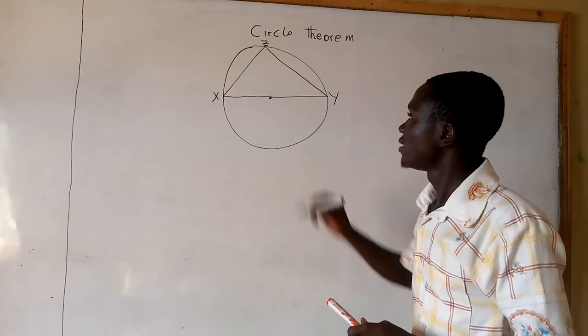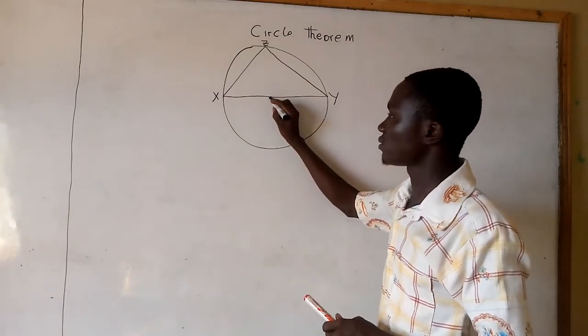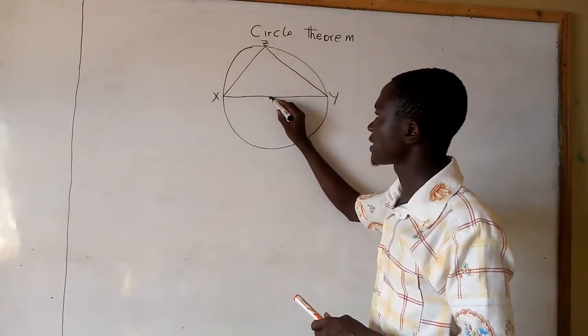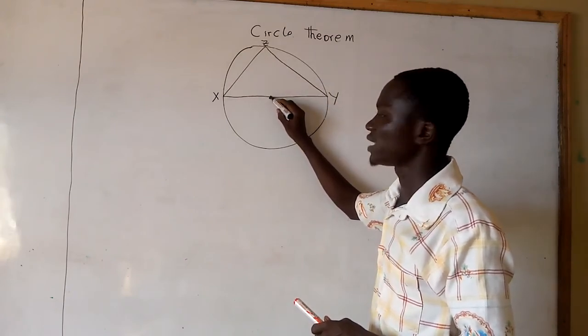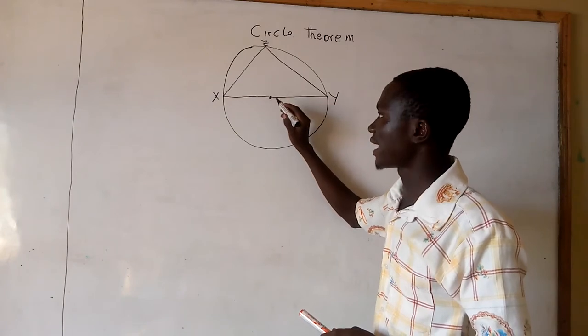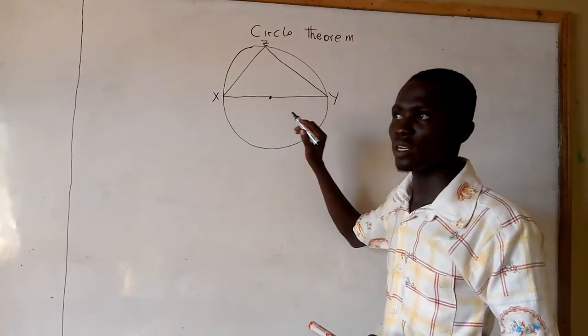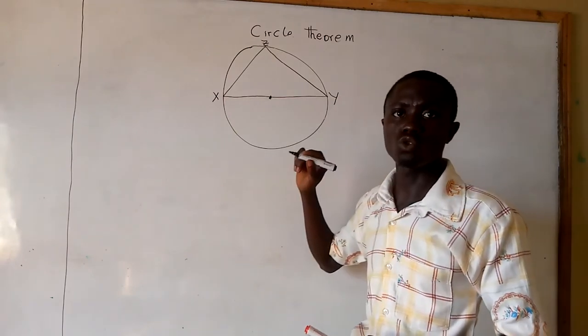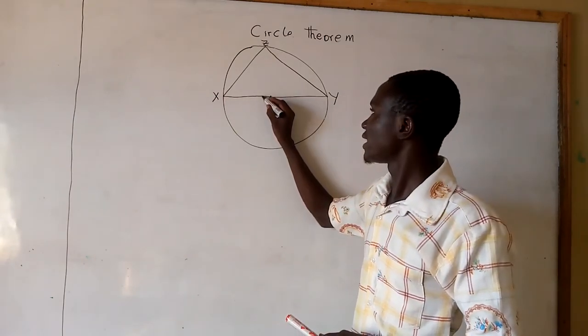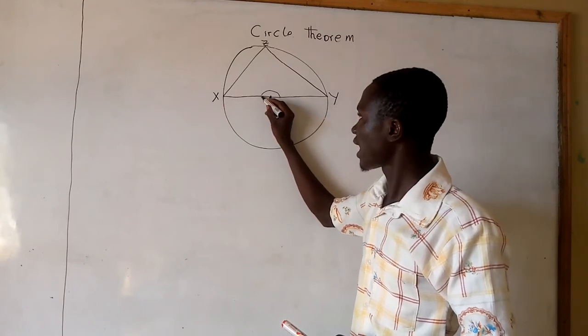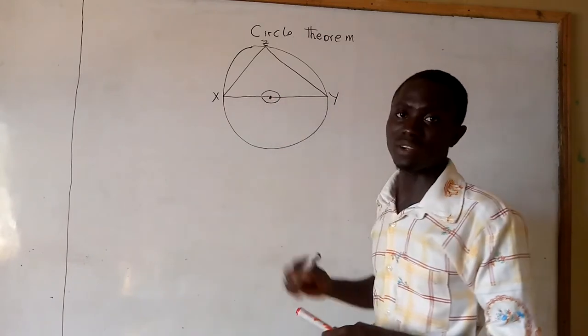Now, at the center of the circle, the circumference of the circle sustains an angle of 360 degrees. Since the diameter of the circle divides the circle into two equal parts, the angle here is 180 and the angle here is also 180.